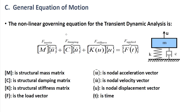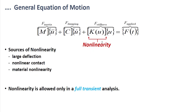The general equation of motion: the nonlinear governing equation for transient dynamic analysis includes an inertia term with the mass matrix and nodal acceleration vector, a damping force term with the structural damping matrix and nodal velocity vector, and a stiffness term with the structural stiffness matrix and nodal displacement vector. The displacement-dependent stiffness term represents the nonlinear component. Nonlinearity is allowed only in full transient analysis.